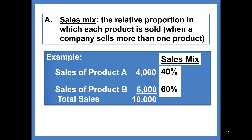These numbers are calculated by simply taking the sales for each product — product A, 4,000 units — and dividing by total sales of 10,000 units. And for product B, it's 6,000 units divided by 10,000 units.